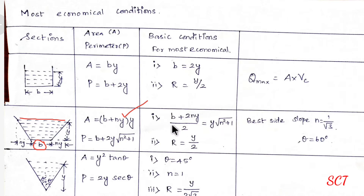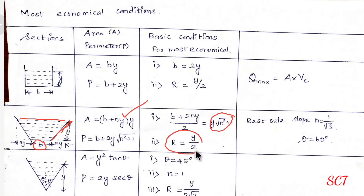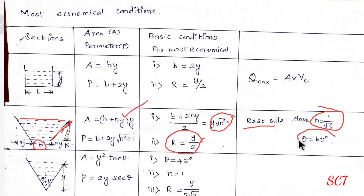For the most economical conditions: top width B plus 2ny divided by 2 equals the slant side length — meaning the half top width equals the length of one side slope. Hydraulic mean depth R equal to y by 2. Best side slope condition: n equal to 1 by square root of 3, theta equal to 60 degrees.